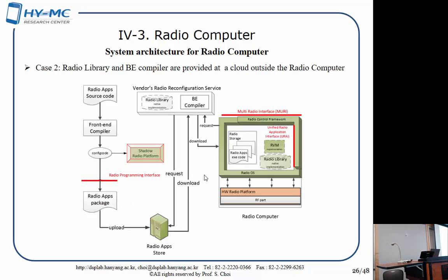Case two: back-end compilation is performed in a cloud instead of inside your mobile device. You perform front-end compilation to get compute codes, form radio application packages, and make them available. Then you download the radio application code onto the cloud, where back-end compilation is performed — because back-end compilation requires a lot of power and computation. The resulting executable code is then lined up in accordance with your platform through the radio virtual machine and executed.